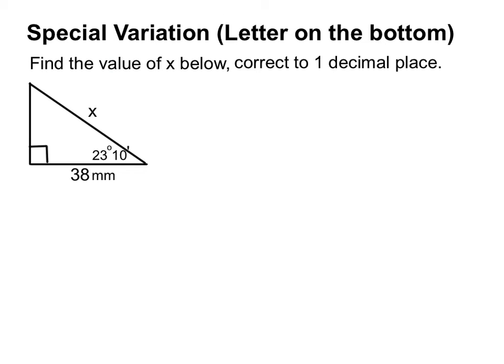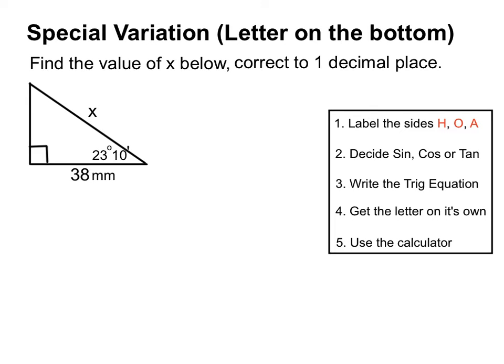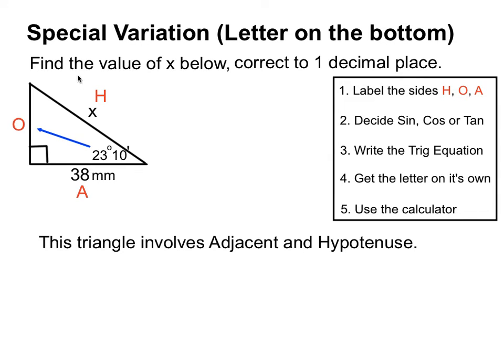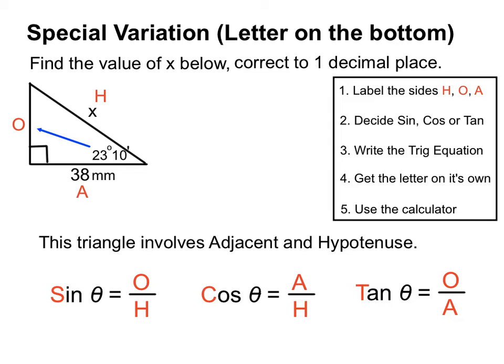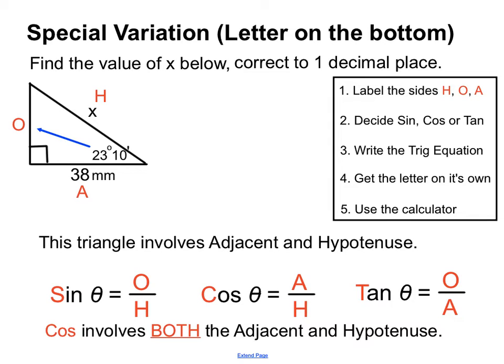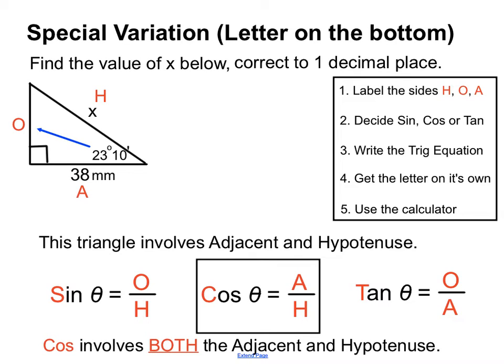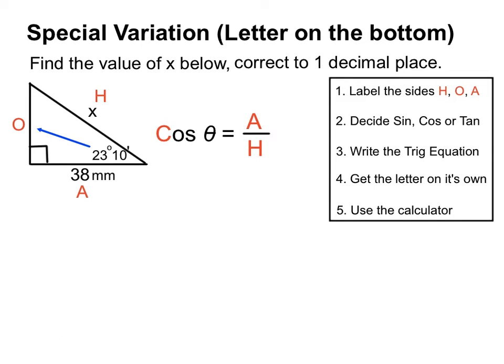Now here's a bit of a variation — something slightly different. We label the sides: the hypotenuse is the longest one, and we have an opposite and an adjacent side. This one involves the adjacent — with a number — and the hypotenuse with a letter. We choose cosine because it involves both the adjacent and the hypotenuse.